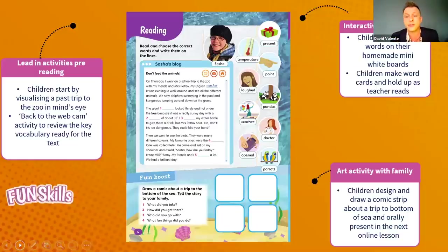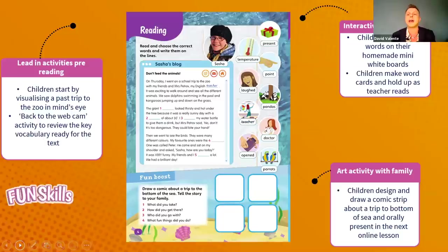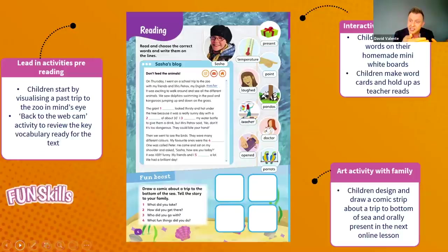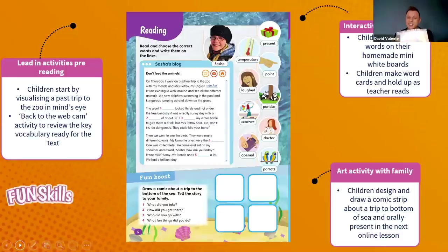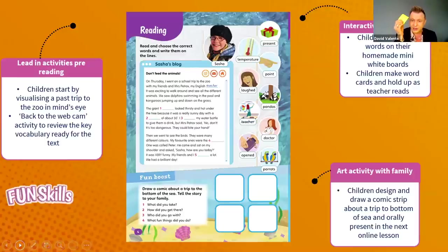In the physical classroom, a child takes the hot seat and the other children give mimes or examples to help them say 'pandas' or 'parrot' or 'opened,' and so on. This can be done as a 'back to the webcam' activity online — adapting these classic physical classroom activities to the online virtual learning environment. Then, to make the reading tasks more interactive, we can again use our mini whiteboards where the children hold up their words or erase them, or post-it notes as well.